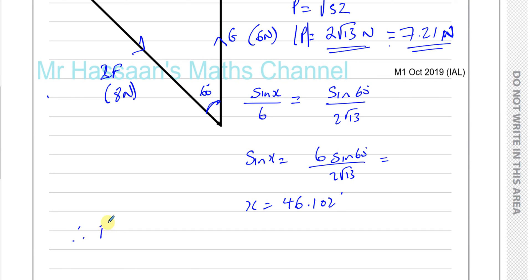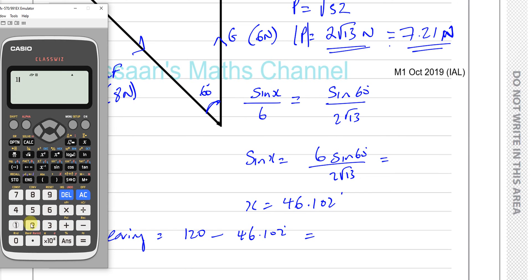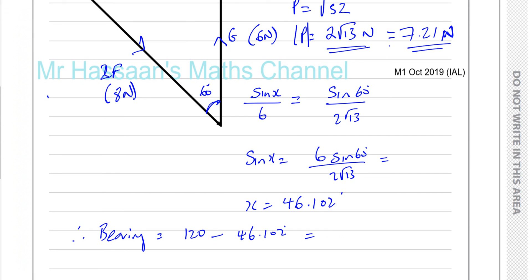So therefore, the bearing that we're looking for, the bearing, will be 120 minus 46.102. So I take my answer, it has a 120 minus the answer, which gives you 73.897, 73.897, it continues on like that.